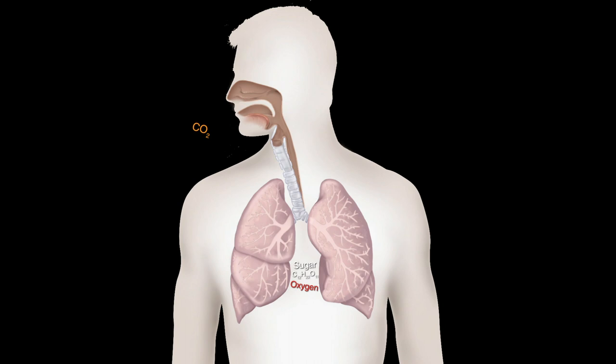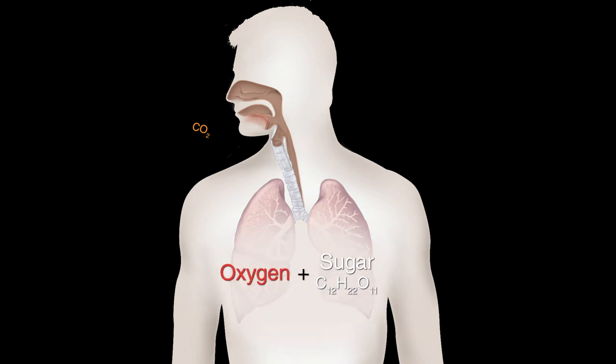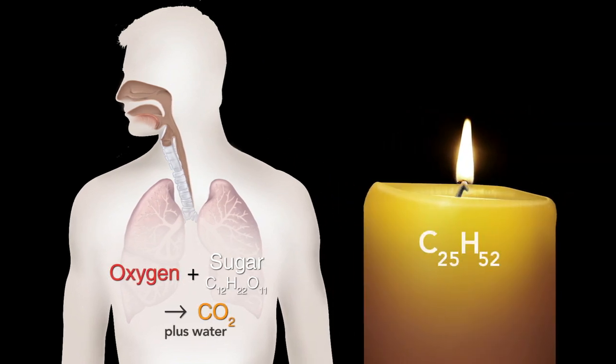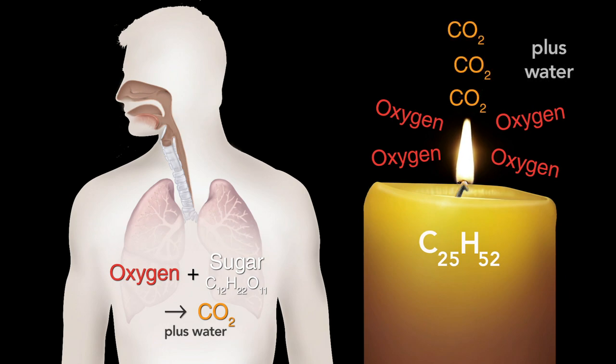The oxygen can thus act upon the food, producing precisely the same results in kind as we have seen in the case of the candle. The candle combines with parts of the air, forming carbon dioxide, and evolves heat. We may thus look upon the food as fuel.